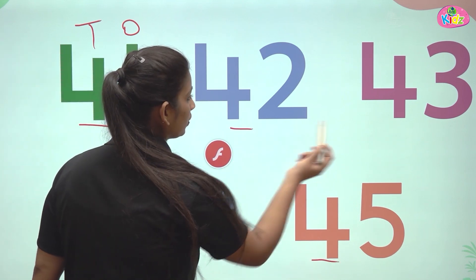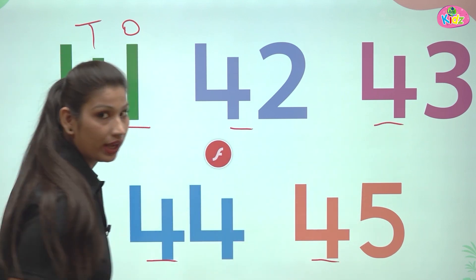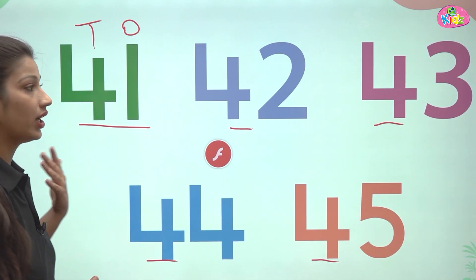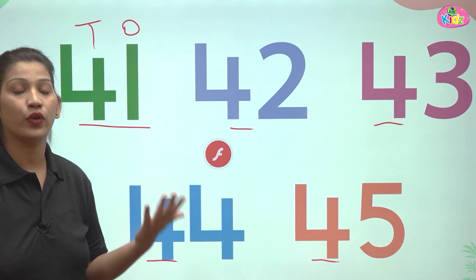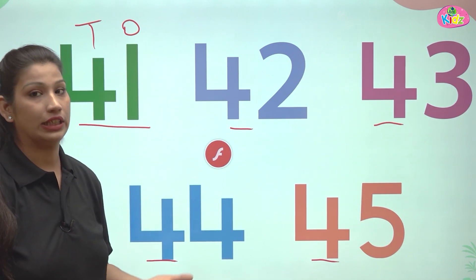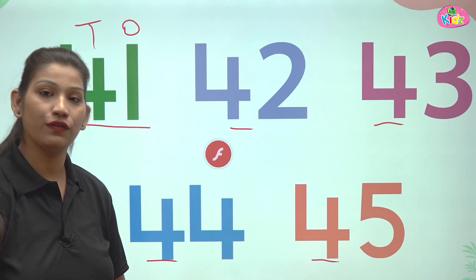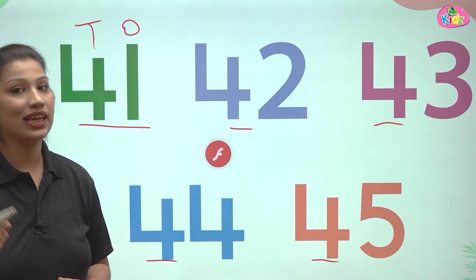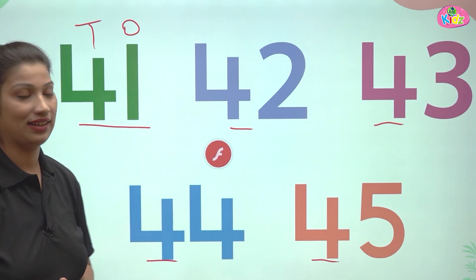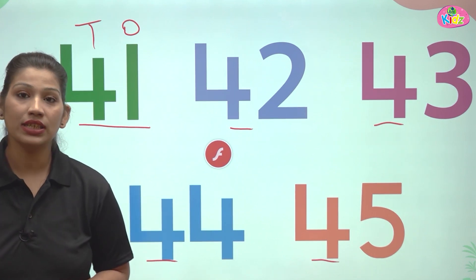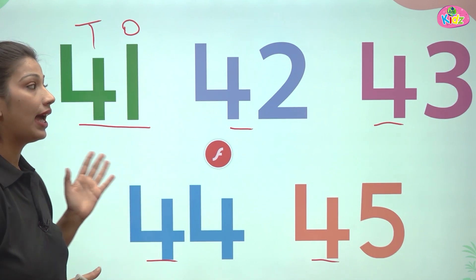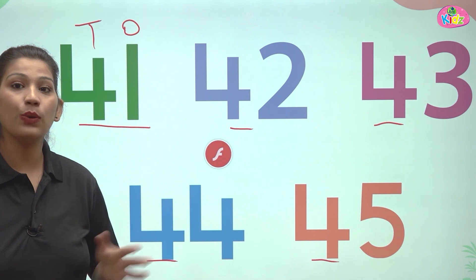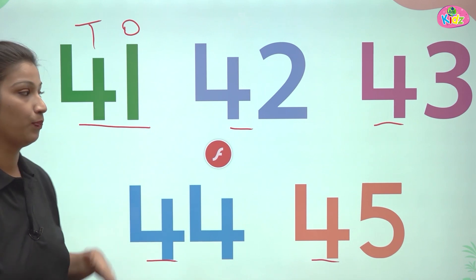Sarei numbers ke 10's position pe 4 hai. Hum 40 se aaghe ki counting kar rahe hai, jo ki hoti hai 41, 42, 43, 44, 45 and so on. Aaghe ki hum next session mein karenge. 45 tak humne counting kari hai and these numbers keep on increasing one by one.